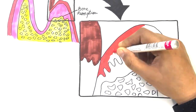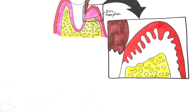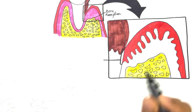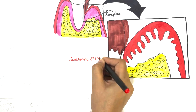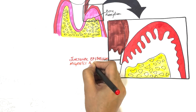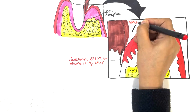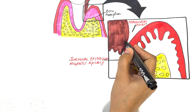In this advanced lesion, the destruction of collagen fibers further extends into the periodontal ligament and the alveolar bone. The junctional epithelium migrates apically to fill the collagen-depleted areas, and hence a periodontal pocket is formed which is lined by the pocket epithelium.